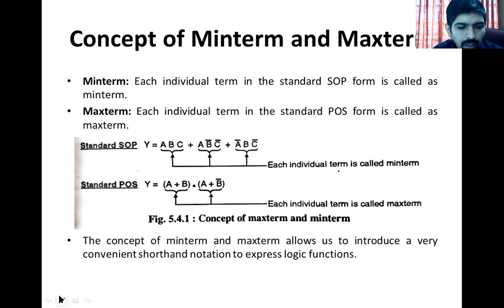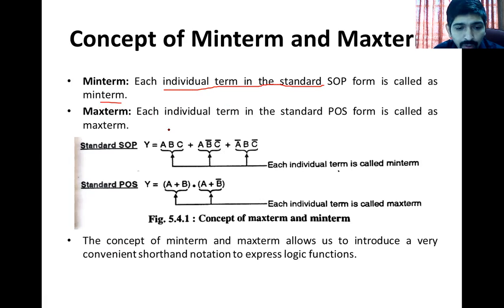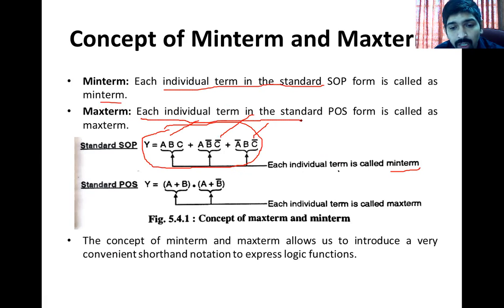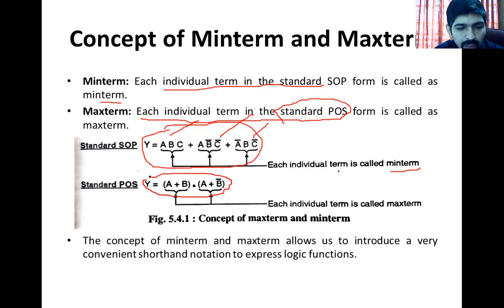So, what is the concept of Min Term and Max Term? Each individual term in the SOP Form is called a Min Term. We also call it Product Terms — these product terms we can also call Min Terms. What is the Max Term? Each individual term in the Standard POS Form — in the Product of Sum Form — is called a Max Term.